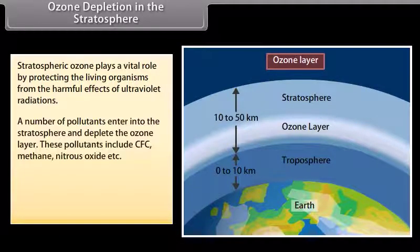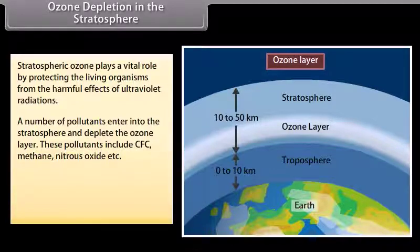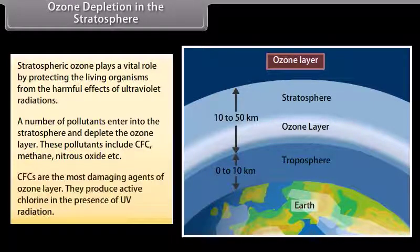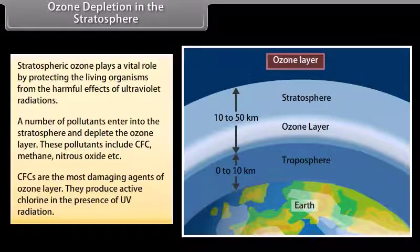A number of pollutants enter into the stratosphere and deplete the ozone layer. These pollutants include CFCs, methane, nitrous oxide, etc. CFCs are the most damaging agents of the ozone layer — they produce active chlorine in the presence of UV radiation.